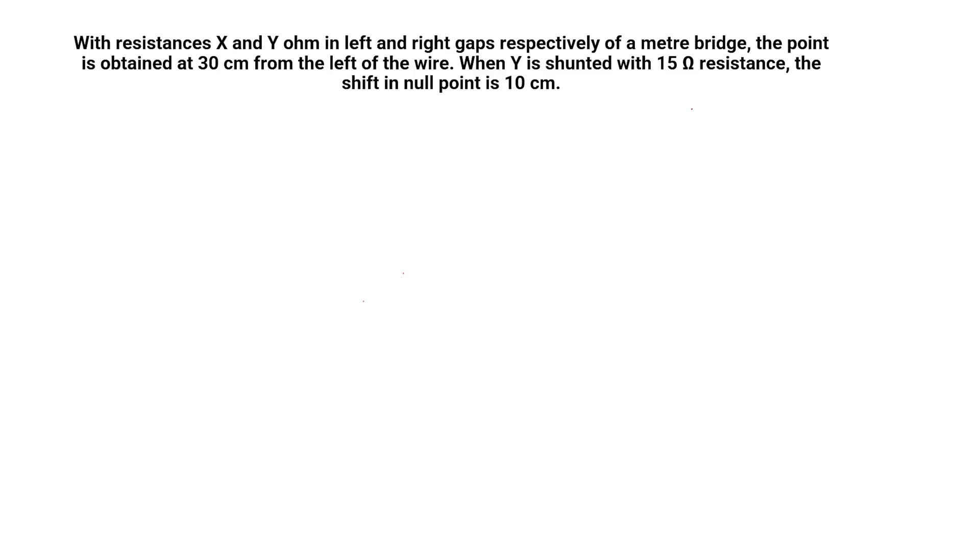With resistances X and Y ohm in the left and right gaps respectively of the meter bridge, the point is obtained at 30 cm from the left of the wire. See here galvanometer G shown. We are going to do 30 cm and this is 70 cm.